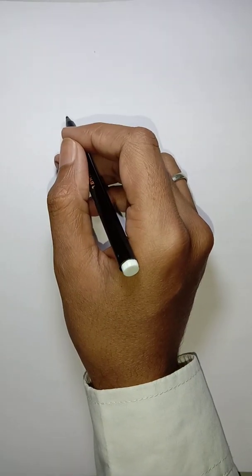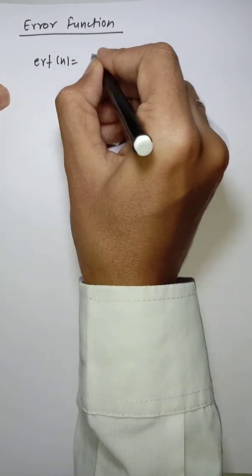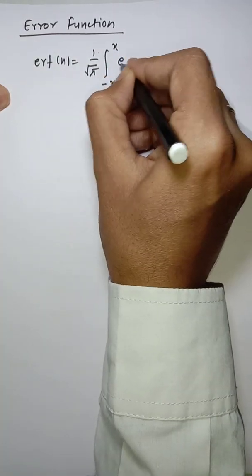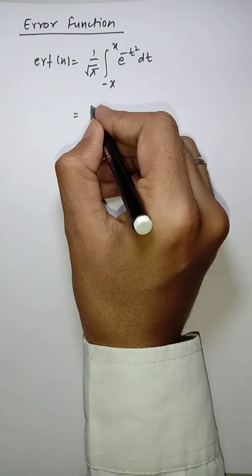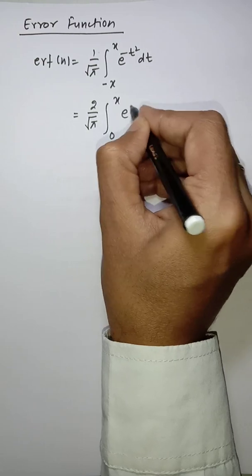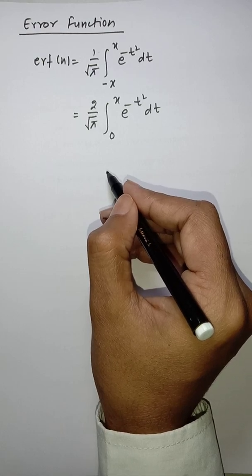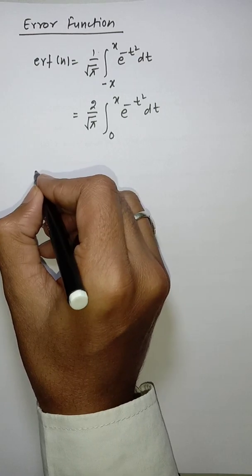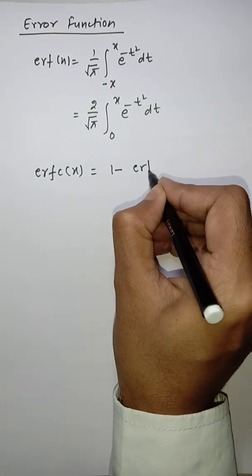In this lecture we are going to discuss the error function. The error function of x is defined as erf(x) = (1/√π) × integral from −x to x of e^(−t²) dt, which by the property of definite integrals can also be written as (2/√π) × integral from 0 to x of e^(−t²) dt. The complementary error function is defined as erfc(x) = 1 − erf(x).